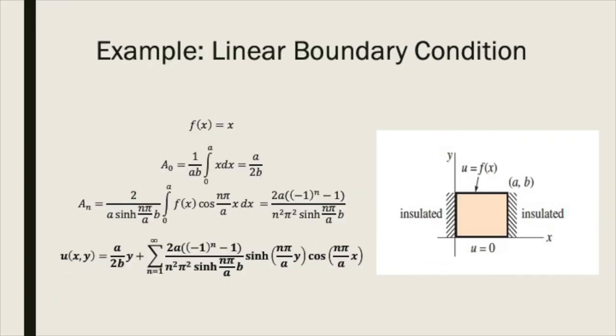Let's run through a quick example. Assume that the boundary temperature at y equals b varies linearly from 0 to a. This corresponds to selecting the function f(x) equals x as our boundary function. The Fourier coefficients can then be easily calculated using methods seen in earlier videos.